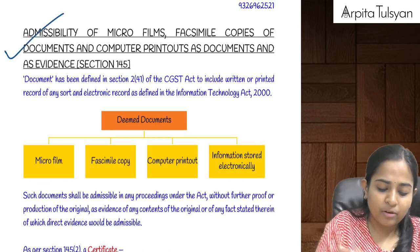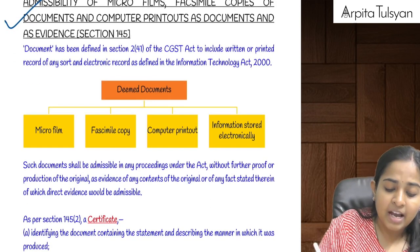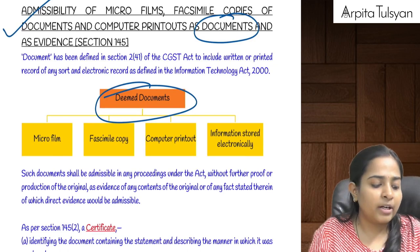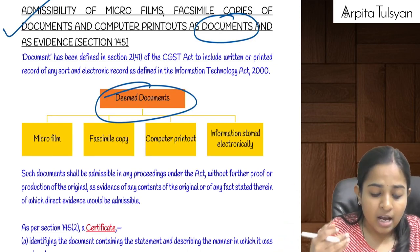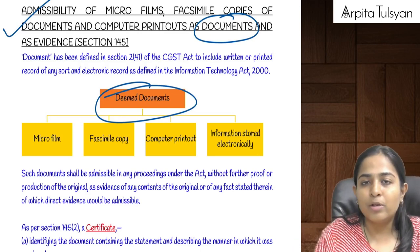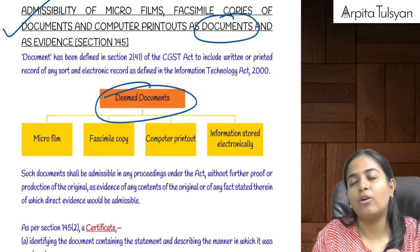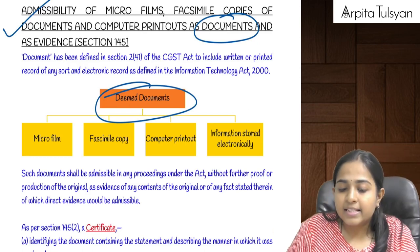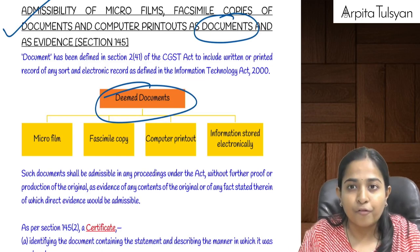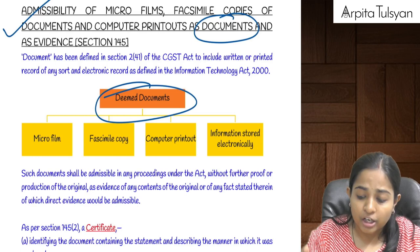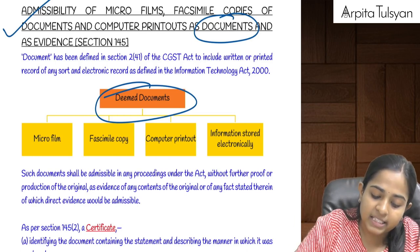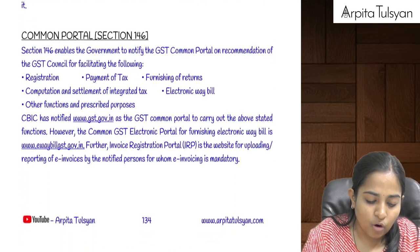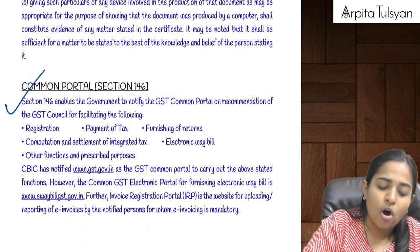Section 145 talks about using documents and deemed documents as evidence. Documents that are printed or handwritten records can be used as evidence under GST law. Along with these, there are deemed documents — assumed to be documents — such as fax copies, microfilms, soft copies of information, or computer printouts. These can also be used as evidence in the court of law and under GST law.